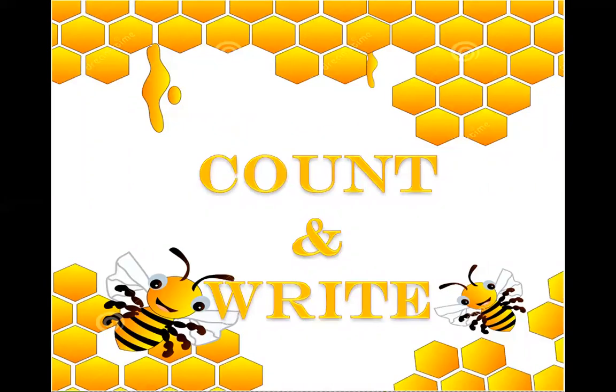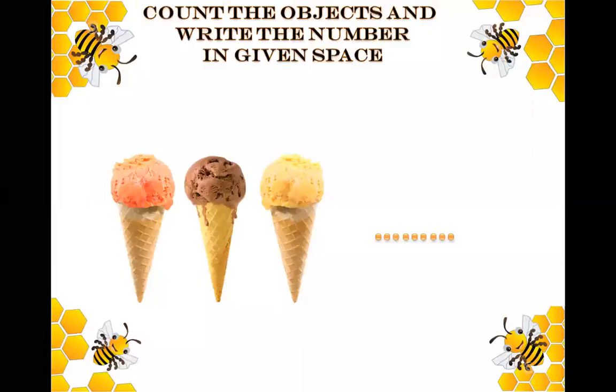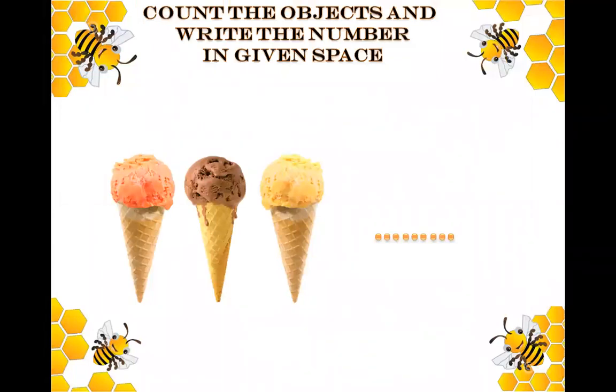Now count and write. You have to count the objects and write the correct number. What is this? This is an ice cream cone. Please count: one, two, three. So you have to write three.